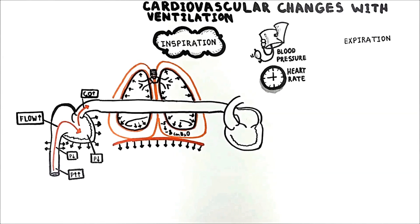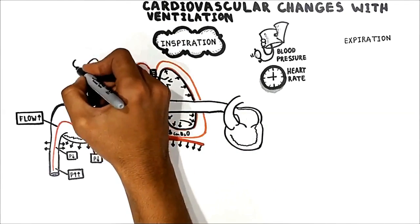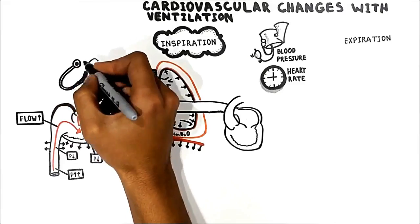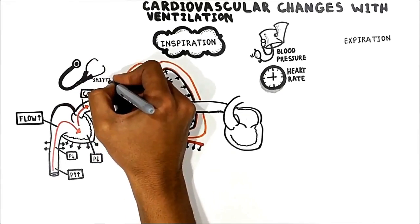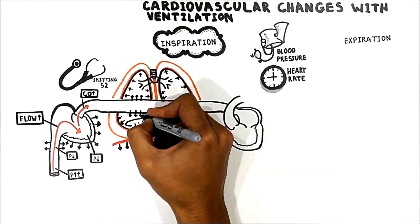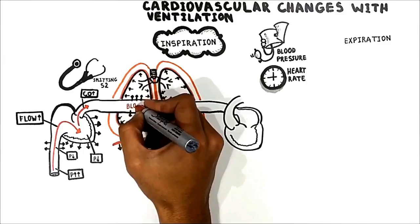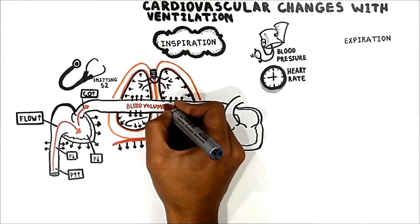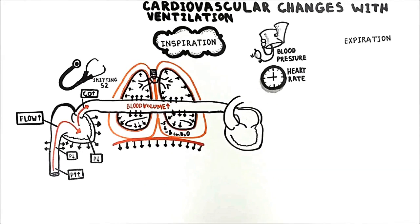An increase in output of the right ventricle delays closing of the pulmonic valves and typically results in a splitting of the second heart sound. Increasing right heart cardiac output means that the lungs receive more blood. Because the pulmonic vessels were expanded when the lungs expanded, the volume of blood in the pulmonary circuit increases, pooling the blood in the lungs.